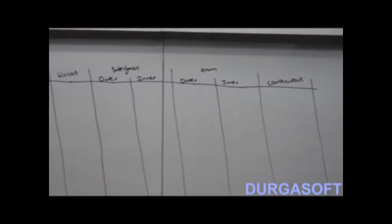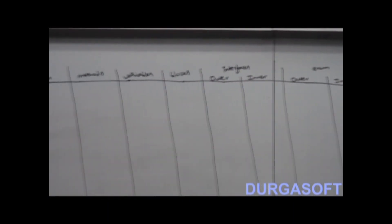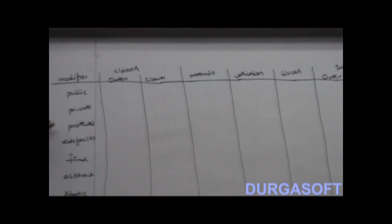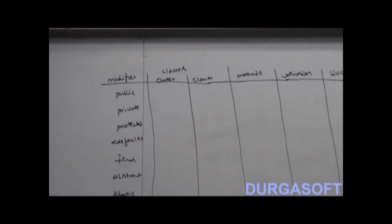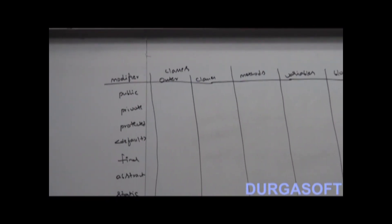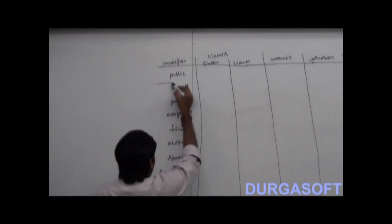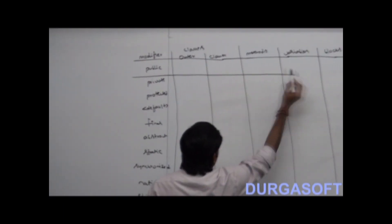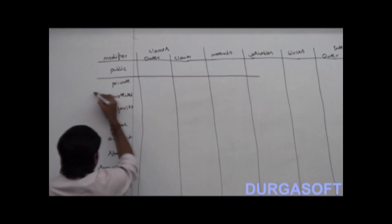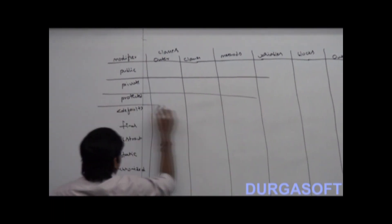We have to fill the total summary table — which modifiers can be applied where. This is the most valuable concept; you must have clear knowledge of it. Let me draw the rules as well, otherwise you people may get confused.